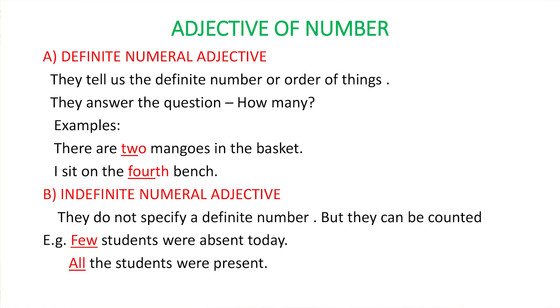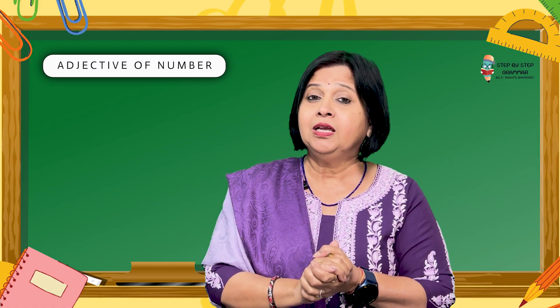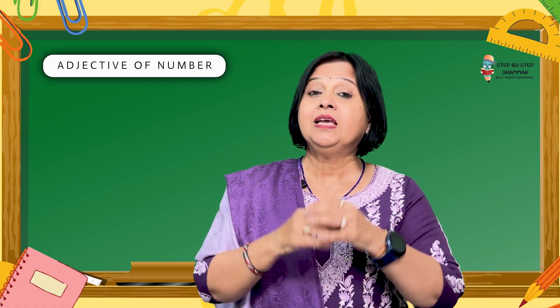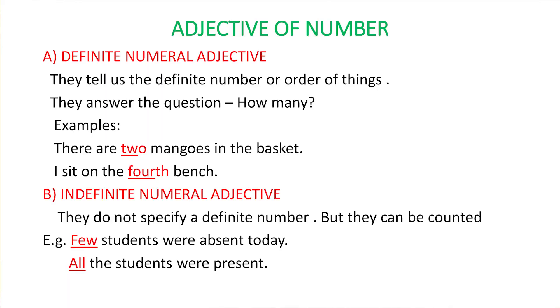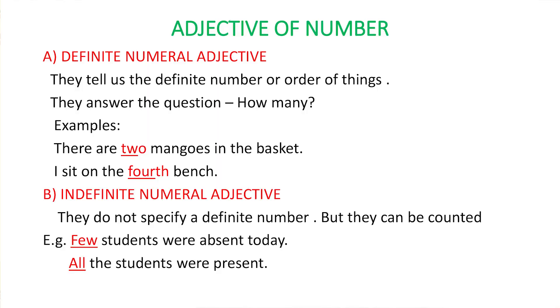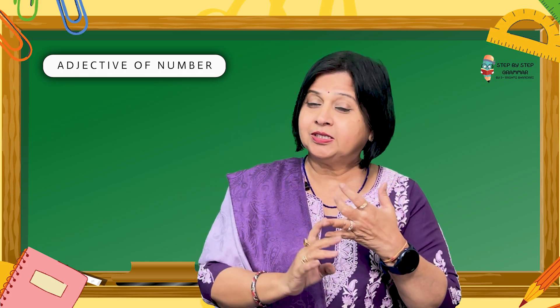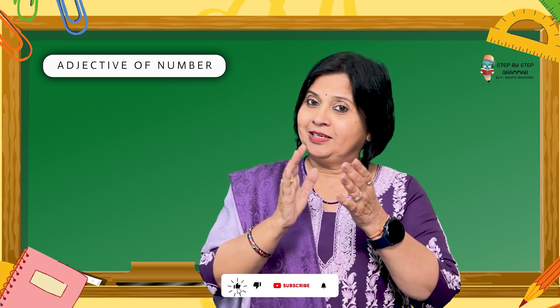Adjectives of number are of two types. The first is the definite adjective of number, wherein a specific number is given in the sentence — for example, 'six boys are absent today.' The second type is the indefinite adjective of number, wherein a definite number is not given, but they are used for countable nouns. For example, 'few children are absent today' — we can count those few children; they could be two, three, four, or any number. Or 'all the children are present today' — that all could be 15, 20, 30, 40, or 50 children. If the noun after few, some, or all is countable, it is an indefinite adjective of number.